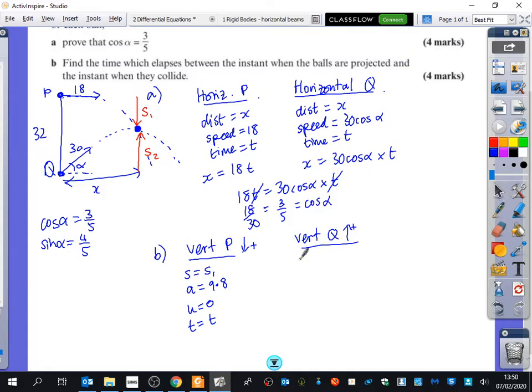So I can say for this one that it's the Q particle. Its displacement is S2. Its acceleration is minus 9.8, because it's going in the opposite direction. Its initial speed is 30 sine alpha, which is 30 times 4 over 5, which is 24. Stop me if I do anything wrong. And we know that the value of T is T.